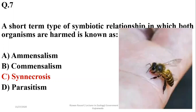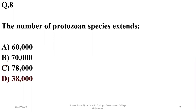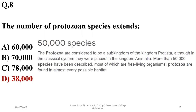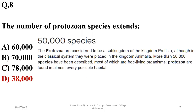Question eight: the number of protozoan species extends to almost 38,000, and according to recent studies, protozoa have approximately 50,000 species. The correct option is D.